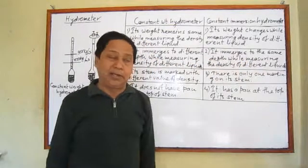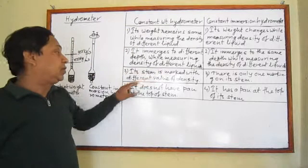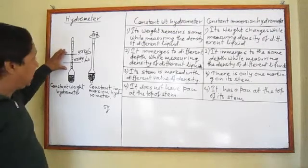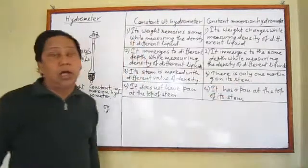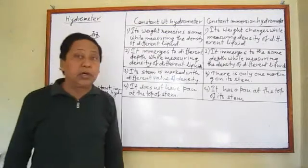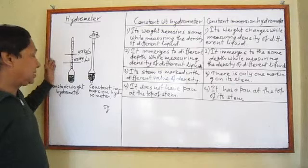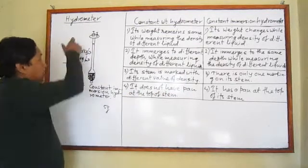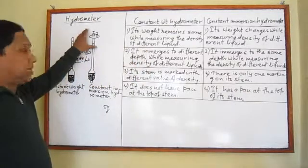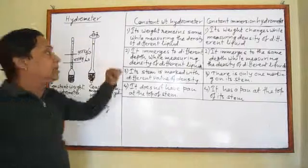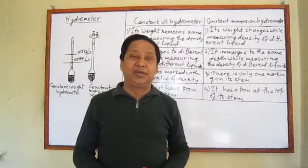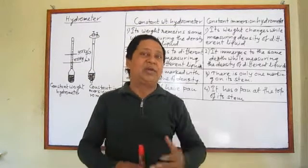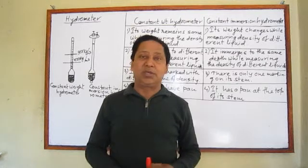Third difference: the stem of the constant weight hydrometer is marked with different values of density, whereas the constant immersion hydrometer has only one marking on its stem. Also, the constant weight hydrometer does not have a pan at the top, but the constant immersion hydrometer has a pan at the top to place standard masses. Nowadays the constant immersion hydrometer is very old and no longer in use, while the constant weight hydrometer is widely used in laboratories.